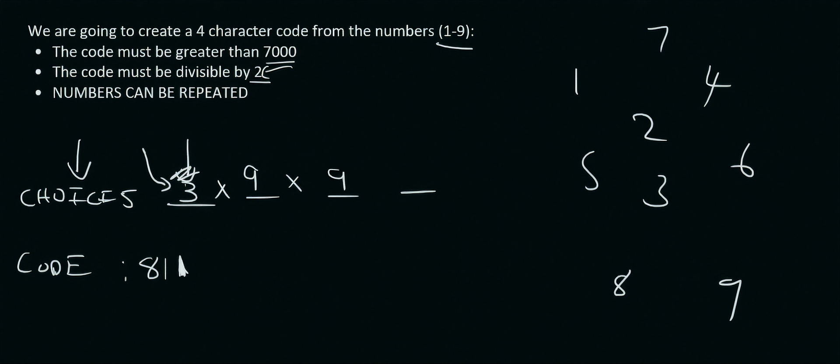Then for the last one, the last number, you have to have a number that is divisible by, or it has to be an even number. So it will be 4, 2, 6 or 8. So there are 4 options available. So we put a 4 over here, and let's say we chose the number 6. So there we go.